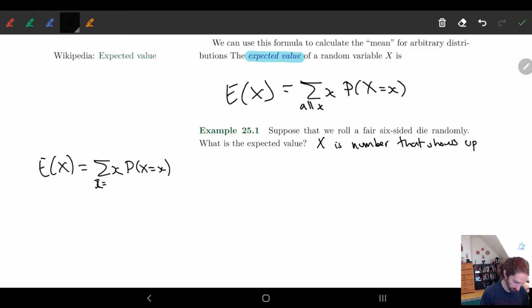So here we have that x is going to go from one to six, right? These are all the possible x. I can have one, two, three, four, five, or six. So what is this? I have one times the probability that x is equal to one, plus two times the probability that x is equal to two, plus three times the probability that x is equal to three, plus four times the probability that x is equal to four, plus five times the probability x is equal to five, plus six times the probability x equals six.